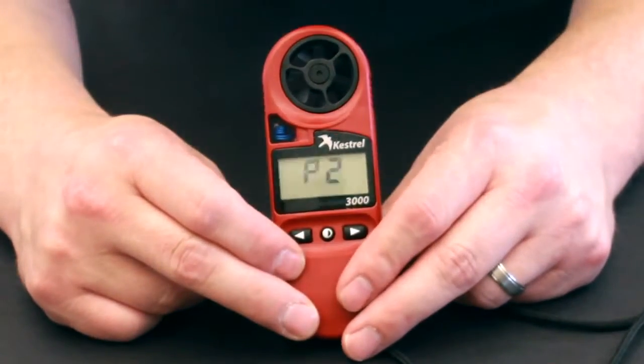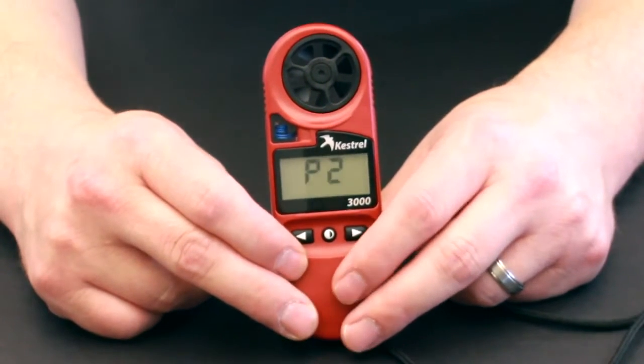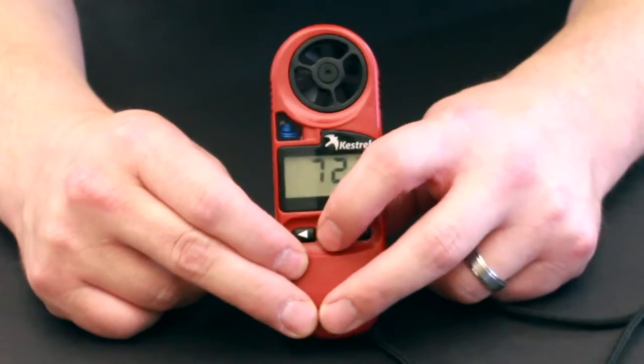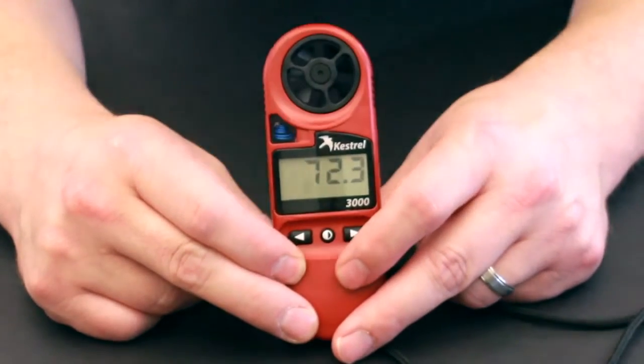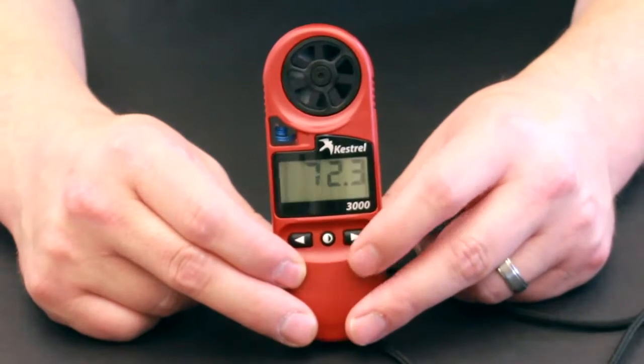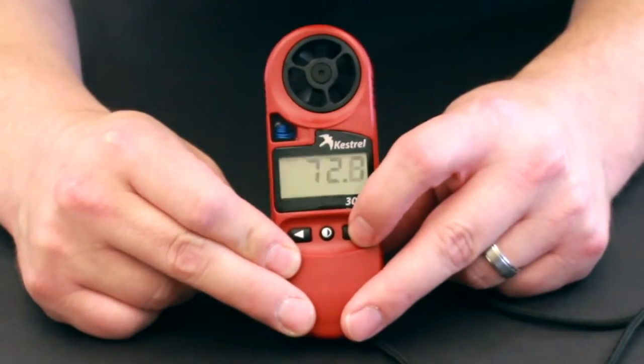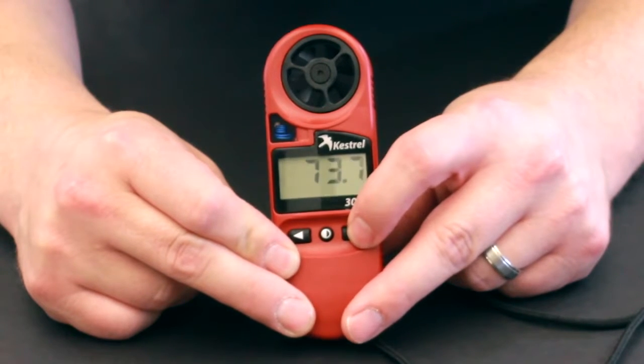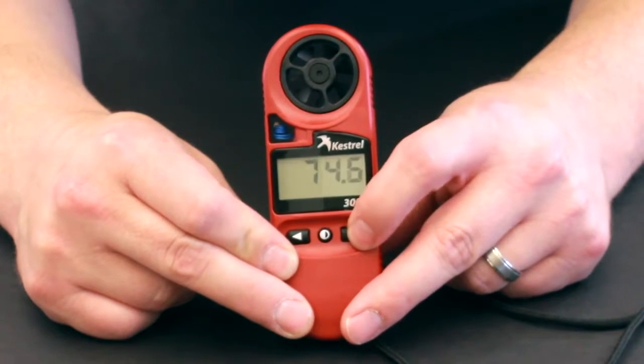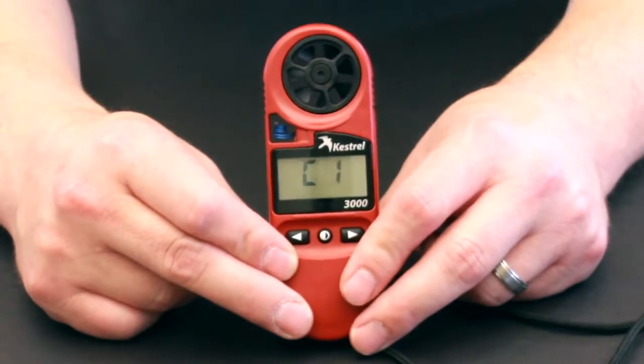Once we have that, we'll hit the center button to move to the second value which is P2. This is going to be the value of the sodium chloride chamber. So let's hit the center button and it says 72.3. We want this to be 75.3 as noted in the instructions, so let's increase this until we get the 75.3. Now we'll hit the center button. Now we're ready to start the humidity calibration.